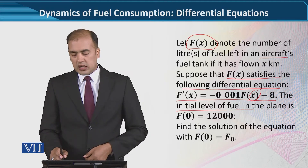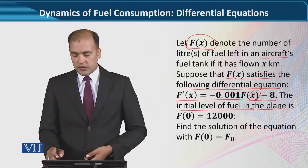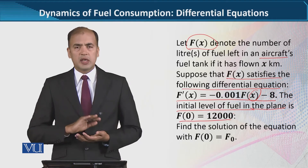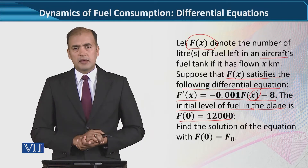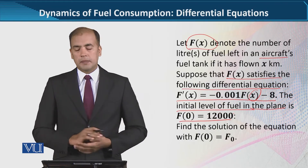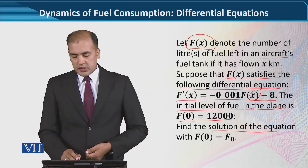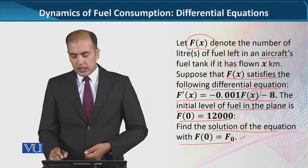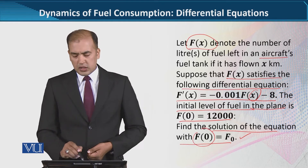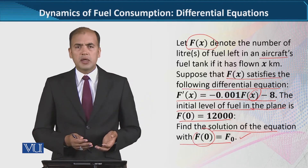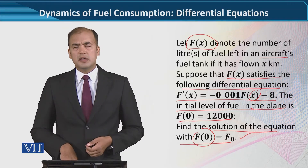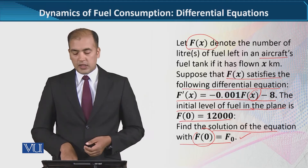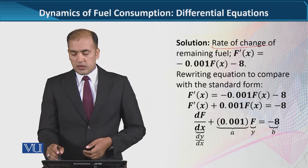The initial condition of the level of fuel in the plane is given. That value is 12,000 — certain units are associated with it. So find the solution of this. We have a solution where the initial condition is given, and we can note it with a subscript notation. The numerical value of the initial condition is 12,000. Let's talk about this given function.